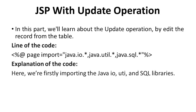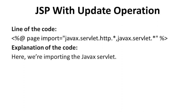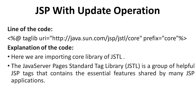The lines of code use the @page import directive with java.io.*, java.util.*, java.sql.*, then javax.servlet.http.* and javax.servlet.*. We close the directives with the percentage sign. Here we are first importing Java input/output, utility, and SQL libraries, and then importing Java Servlet libraries.